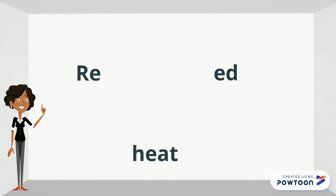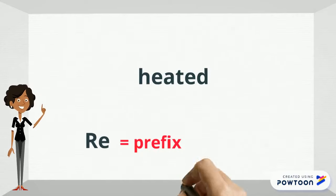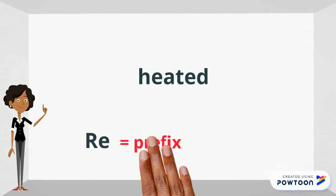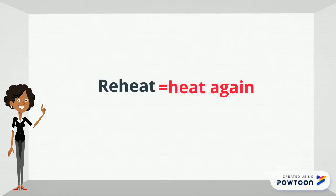Now we're going to look at the beginning and endings that we added to the root word heat. In this word, re is the beginning, or prefix, that is attached to the root word to alter its meaning. Re means again. So when you see the word reheat, we know that it means to heat again.